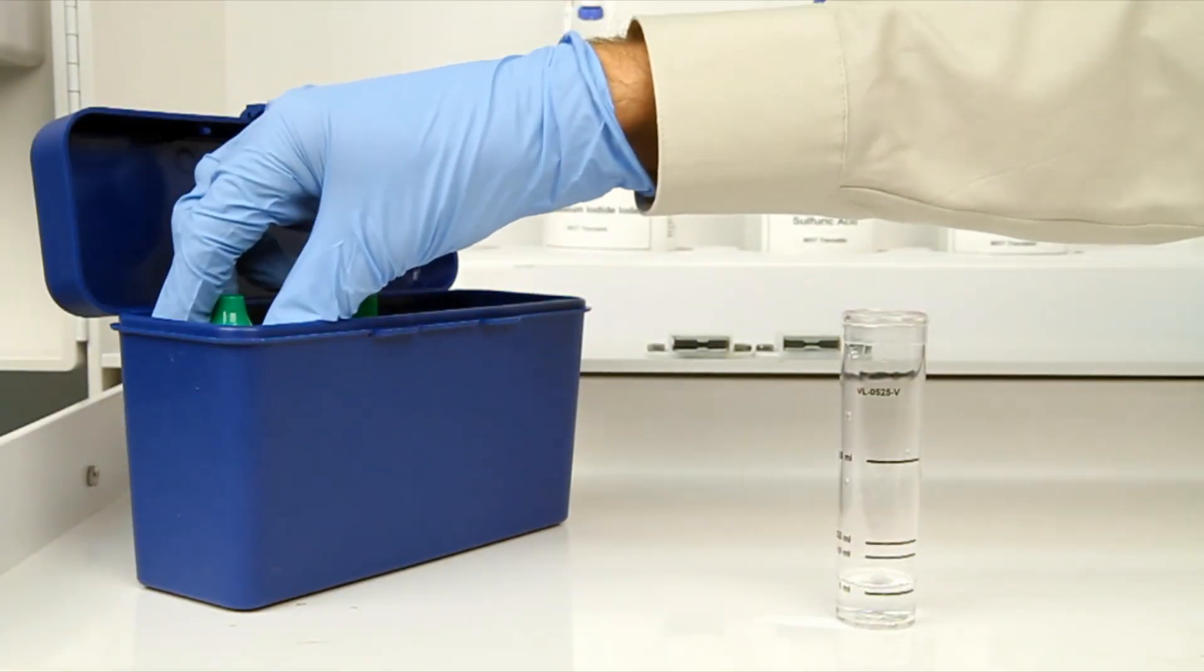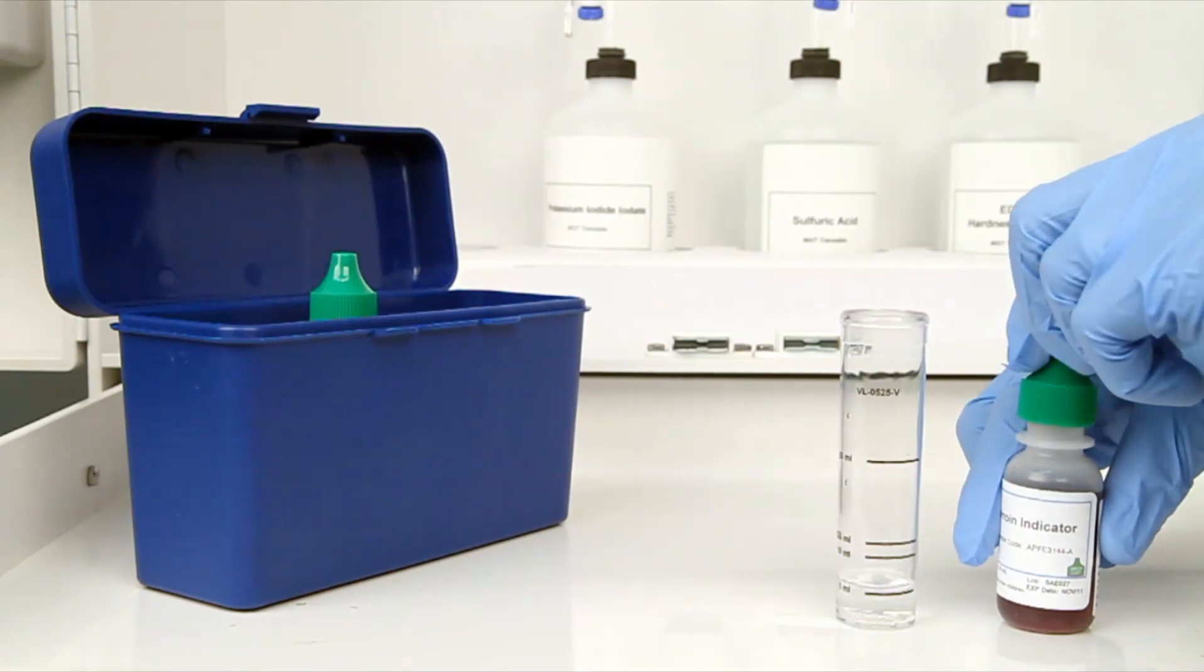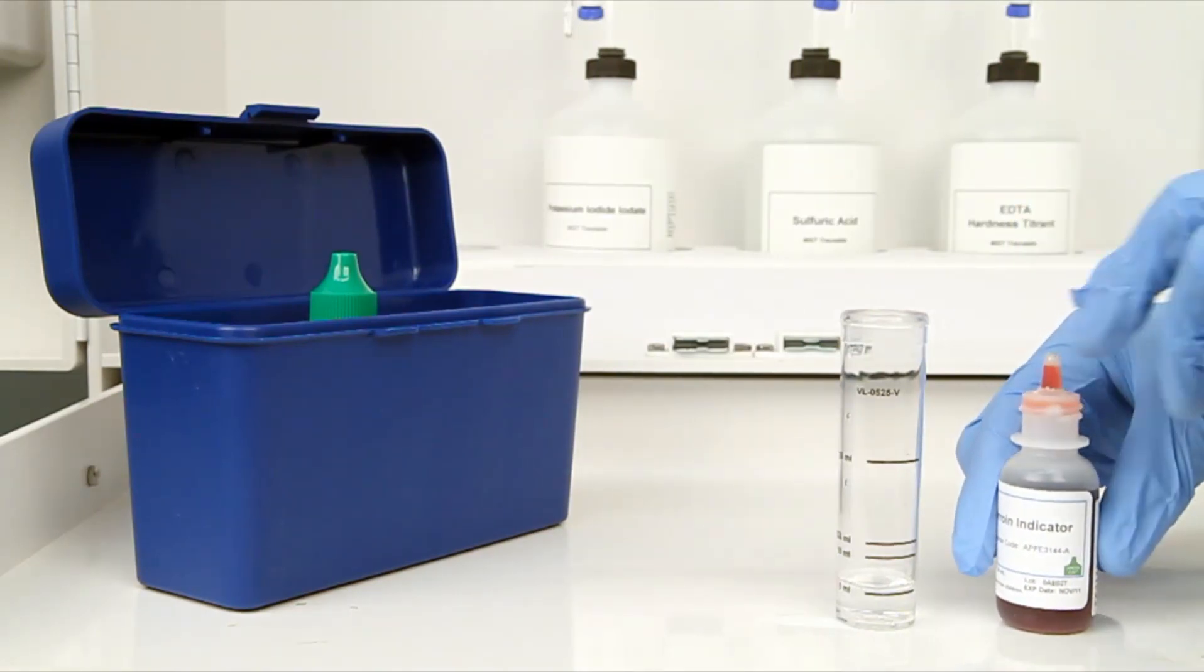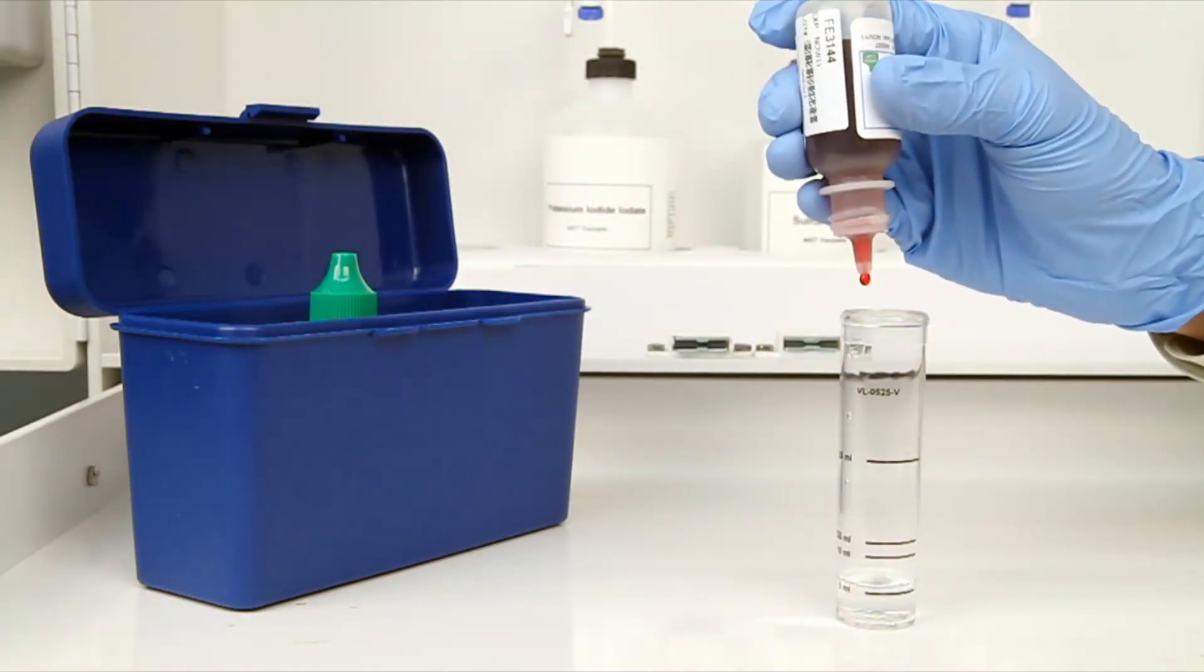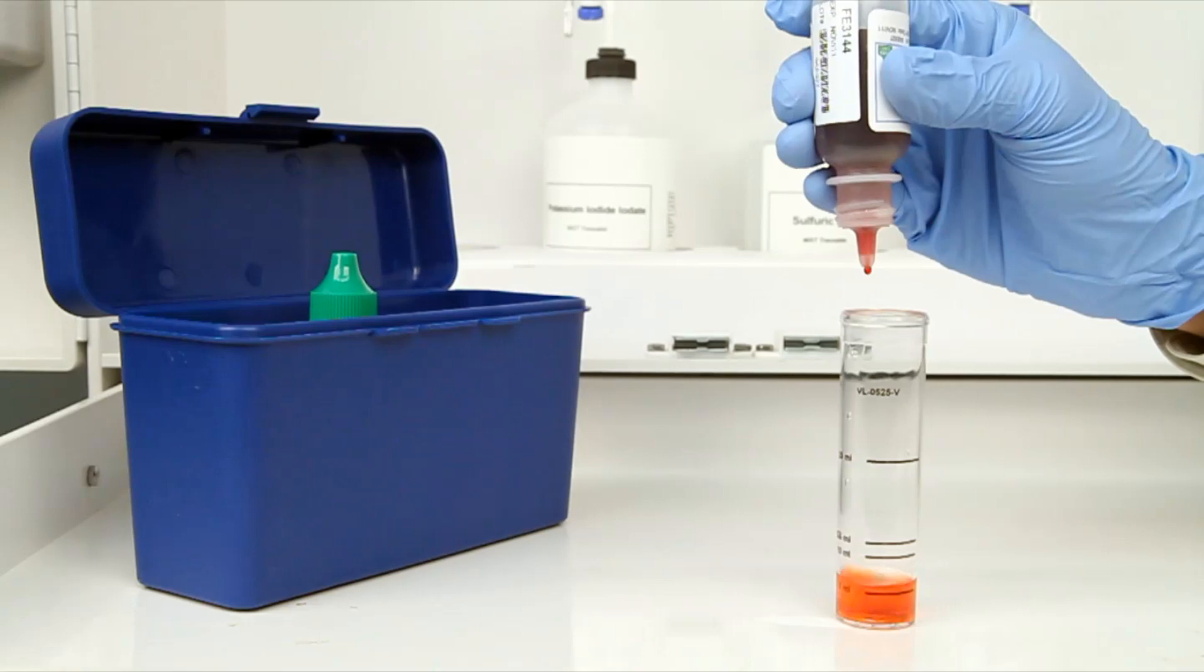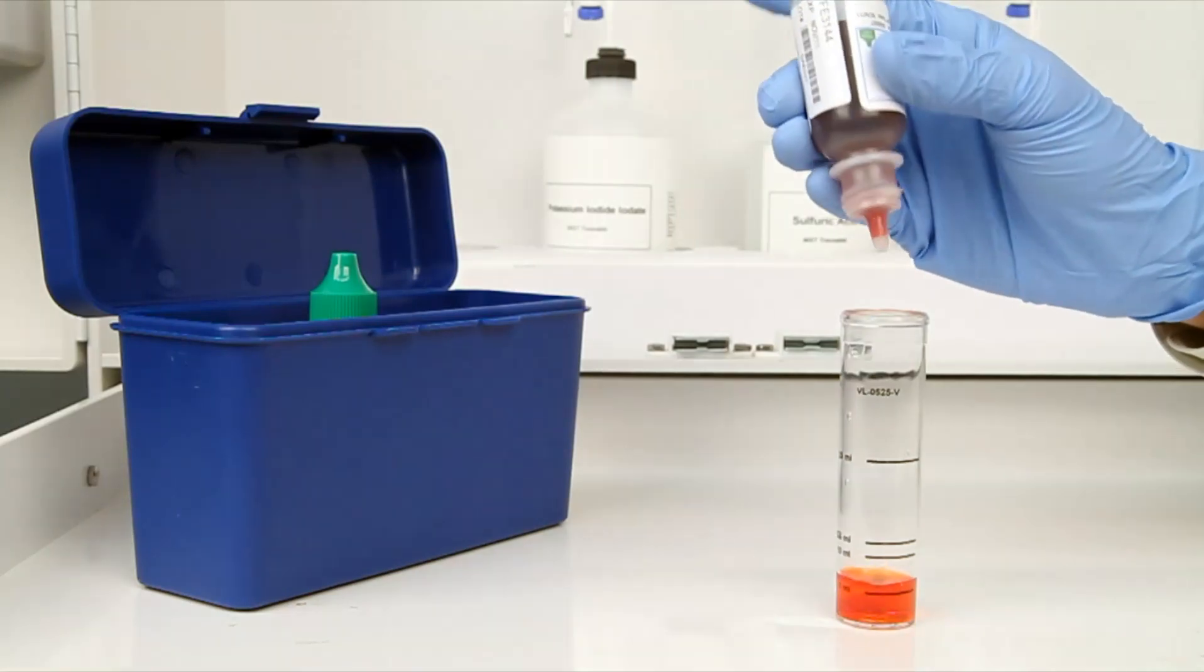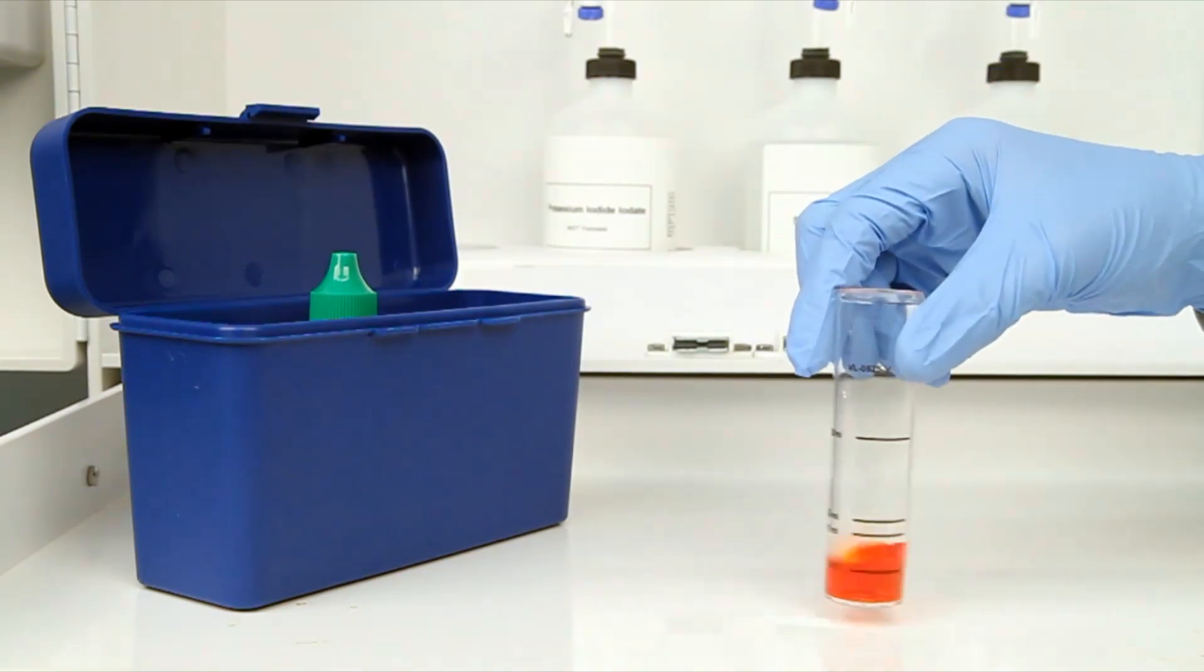The next step according to the endpoint ID procedure is to add eight drops of ferroin indicator. The bottle contains a dropper tip, so it's important to hold the bottle vertically to get a consistent drop size. After the addition of each reagent, it's important to swirl the vial to make sure the reagents are properly mixed.